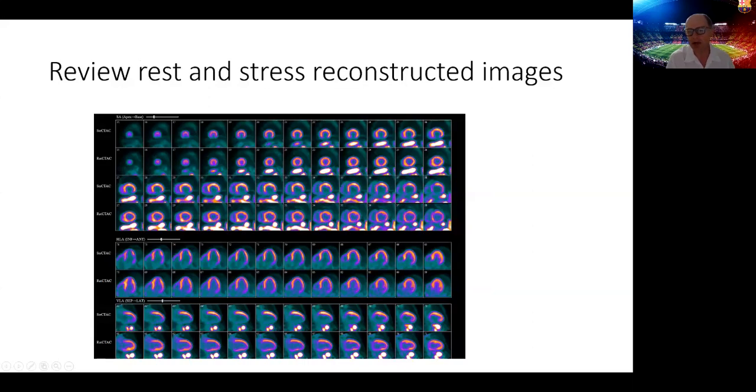Once we process the images, we arrive at the normal display of the stress images on the top and the rest images on the bottom. Starting with the rest images, and remember this is a PET scan, you have a mild perfusion defect involving the inferior wall here. With a PET scan, you should not see attenuation artifacts from the diaphragm, so any perfusion defect should be considered related to decreased blood flow. On the stress images, you can see this defect becomes severe and extends to involve the entire inferior wall. Actually, there's absence of perfusion in the entire inferior wall, at least on these semi-quantitative images.